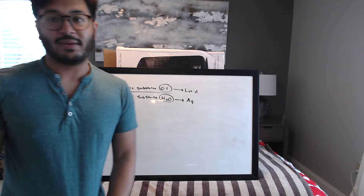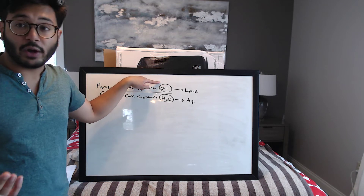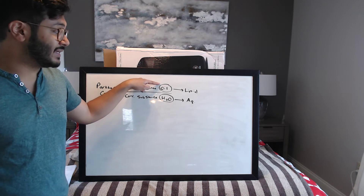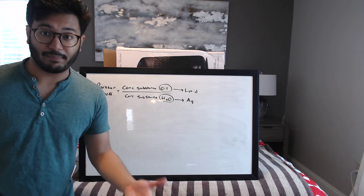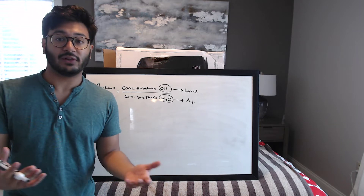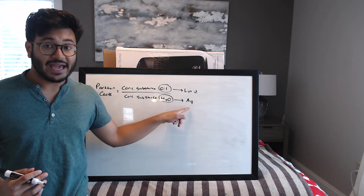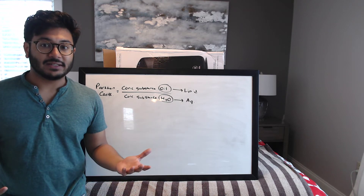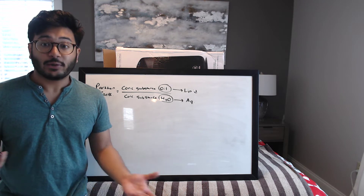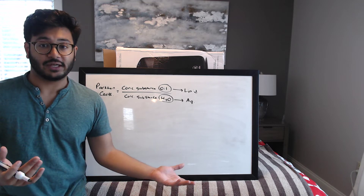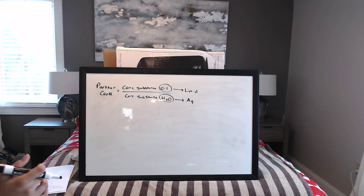If the concentration is higher in the oil phase, the substance has a higher affinity for lipids, meaning it's lipophilic. However, if the substance is mostly in the water or aqueous phase, it has a higher affinity for water, meaning it's hydrophilic. This determines whether or not the substance can cross the cell membrane.